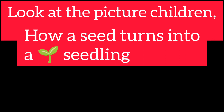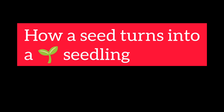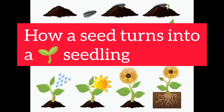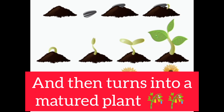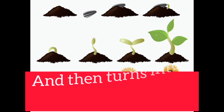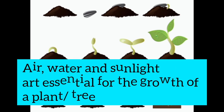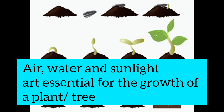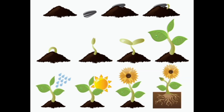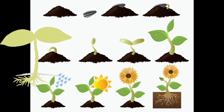Look at the picture, children. How a seed turns into a seedling and turns into a matured plant. Water and sunlight are essential for the growth of any plant or a tree.